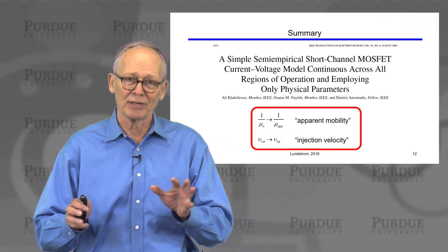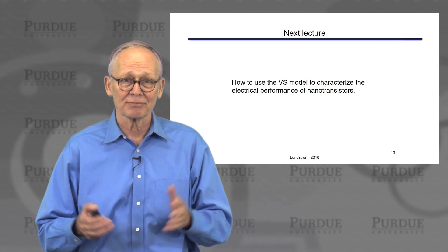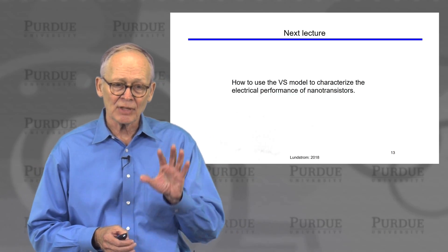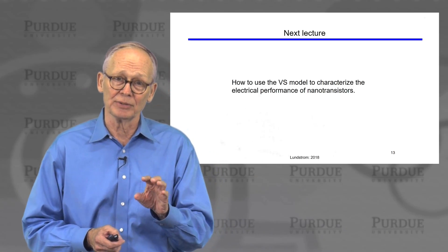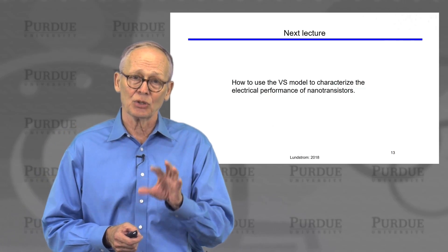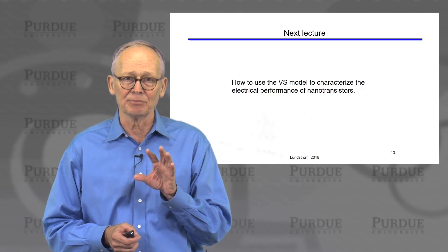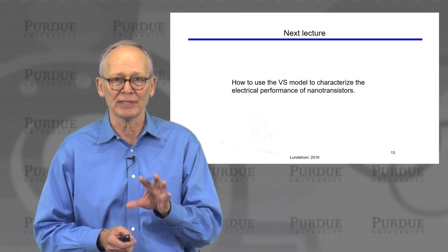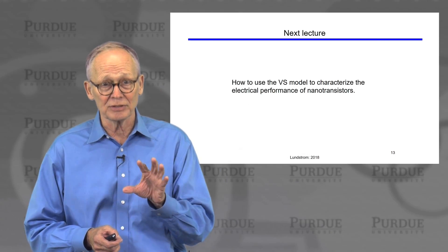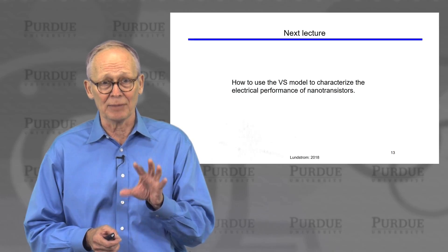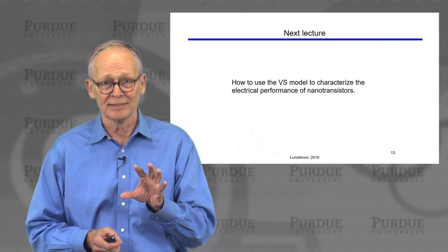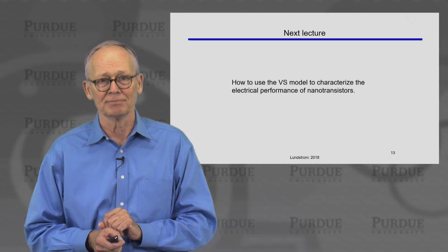So, we have our virtual model established. What's next for the course? Well, the next thing we would like to do in Unit 4 is to show how we can use this virtual source model to analyze measured characteristics of modern transistors and to deduce something about the physical operation of those devices. That's our topic for the next lecture.